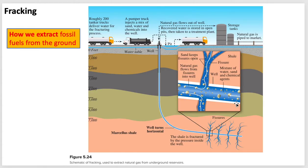Fracking is a technique used when the rock containing the hydrocarbons is shale. The hydrocarbons don't flow through shale very easily, but if you inject a cocktail of liquid into it, it cracks the rock, creating fissures that allow the hydrocarbons to flow through.